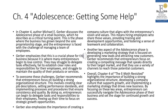Chapter 4: Adolescence — Getting Some Help. In chapter 4, Michael E. Gerber discusses the adolescence phase of a small business, which he describes as a critical turning point. This is the phase where the business has grown beyond the sole proprietorship stage and the entrepreneur is faced with the challenge of managing a team of employees. Gerber emphasizes that many entrepreneurs begin to lose control — struggling to delegate tasks effectively, failing to establish clear roles and responsibilities, and struggling to maintain the quality of their products or services.